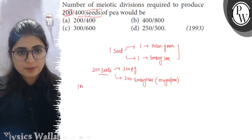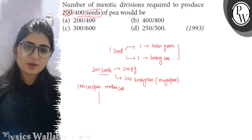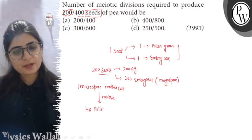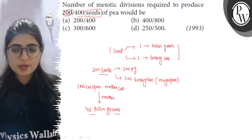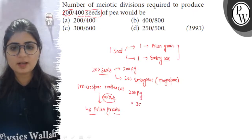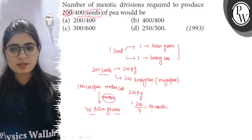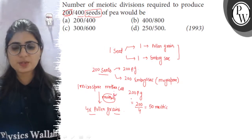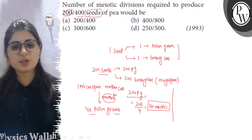One microspore mother cell undergoes meiosis to produce four microspores, and four microspores produce four pollen grains. So, to produce four pollen grains, one meiotic division is required. To produce 200 pollen grains: 200 divided by 4 equals 50 meiotic divisions, because one meiotic division in MMC produces four pollen grains. So, 50 microspore mother cells will undergo 50 meiotic divisions, resulting in 200 pollen grains.